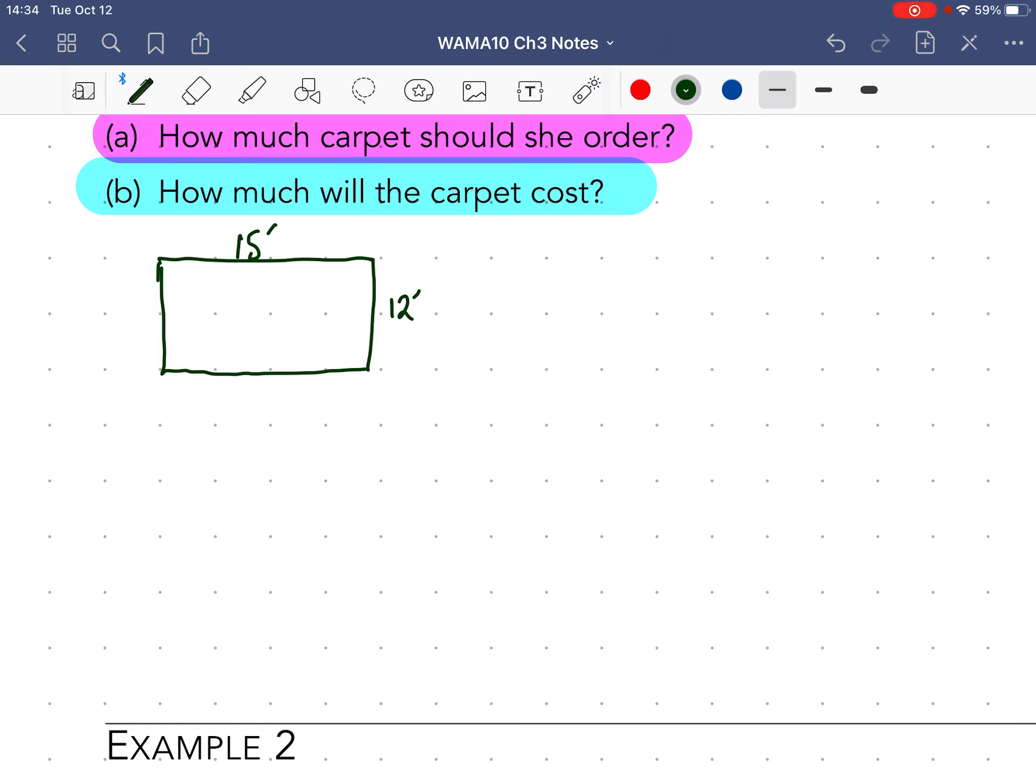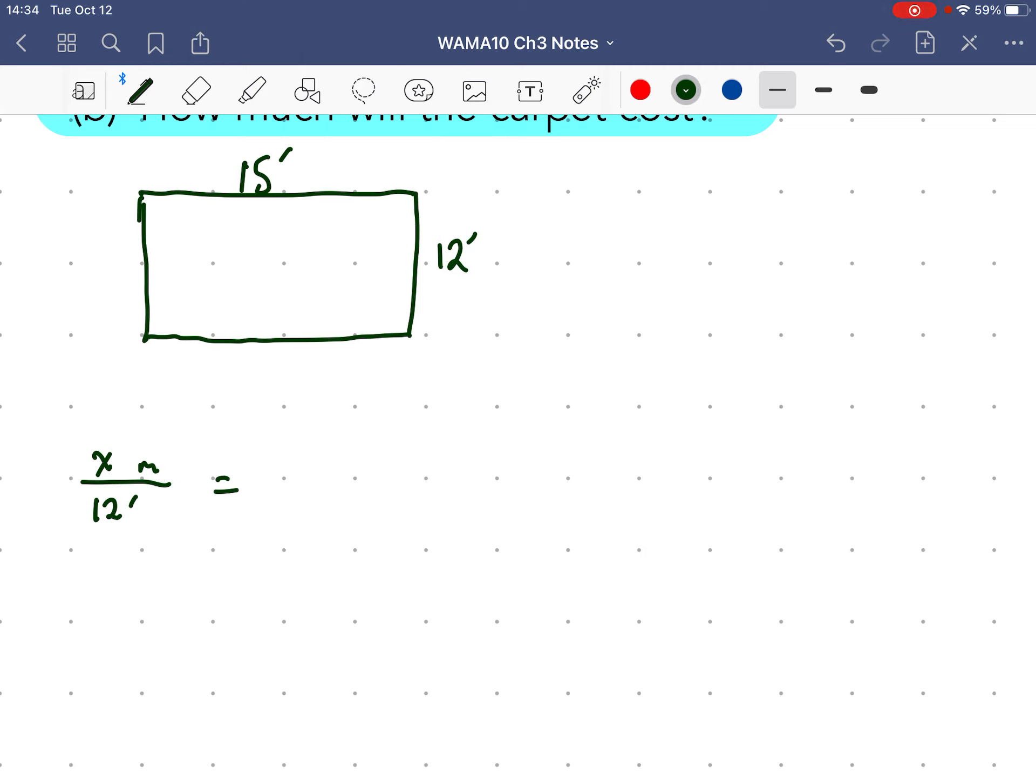All right, so I need my conversion tables out so I can see what I'm doing. Right here. So I'm going to ask this question first: how many meters are there in 12 feet if there is 0.3048 meters in 1 foot? That's my conversion. So I just do 12 times 0.3048 and I get 3.6576 meters. So this becomes 3.6576 meters.